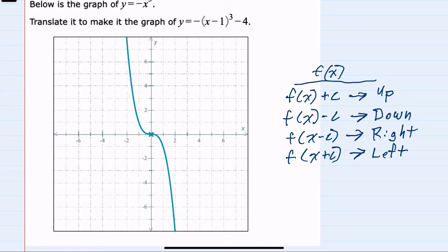To start, we'll recall that when we add a constant to the end of a function, that shifts the function up. When we subtract a constant, that shifts it down.